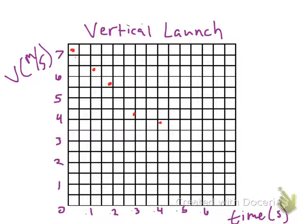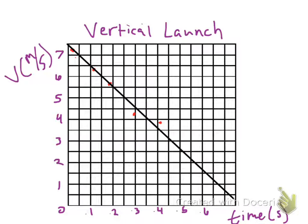You can see the plotted points. Now we draw a best fit line through as many points as possible. The initial velocity is read from the vertical intercept — right at the very top of that line. According to my graph, that's about 7.3 m/s. So v₀ ≈ 7.3 meters per second is the initial speed for this object being launched up into the air.